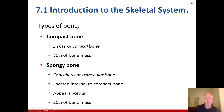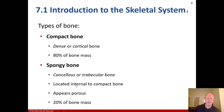Types of bone within the skeleton: we have compact bone, also known as dense or cortical bone, which is 80% of the bone mass. And spongy bone, also known as cancellous or trabecular bone, located internal to the compact bone. It appears porous and is 20% of the bone mass.